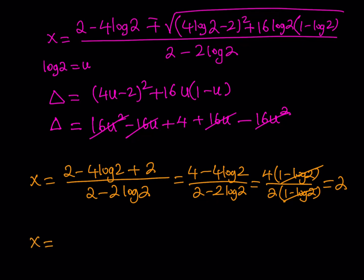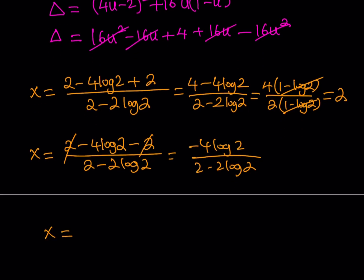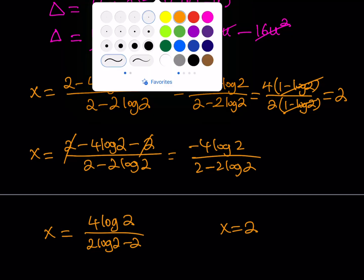It's going to be x equals (2 - 4 log 2 - 2)/(2 - 2 log 2). And now, if you simplify this, the 2's are going to cancel out. You're going to be getting something like (-4 log 2)/(2 - 2 log 2). Now, I don't want to leave a negative there. So what I'm going to do is multiply both the top and the bottom by negative 1. And you know that if you have a difference and multiply it by -1, you're negating it basically by flipping the terms. So x can be written as (4 log 2)/(2 log 2 - 2). So that's one of the solutions. And we also know that x equals 2 is another solution. So those are all the solutions basically.